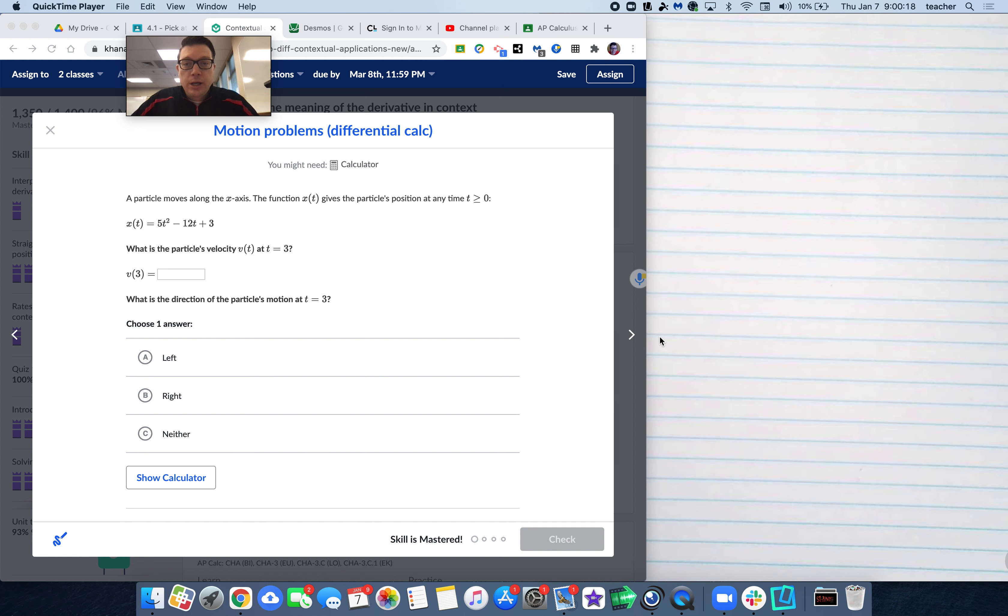Application of derivatives and motion problems, specifically motion problems where we have a distance and a velocity. Here we're given the question: x(t) equals 5t squared minus 12t plus 3. We want the particle's velocity at t equals 3.